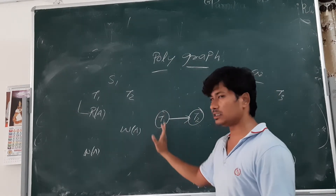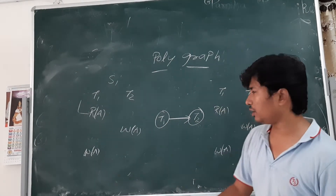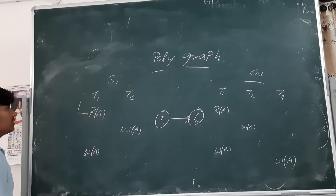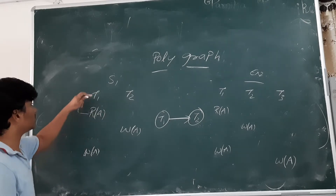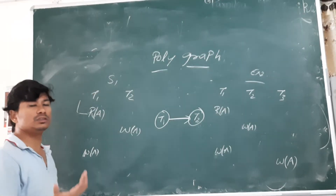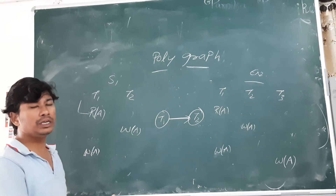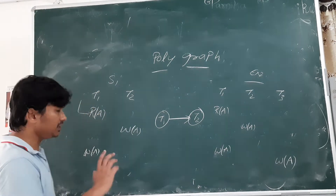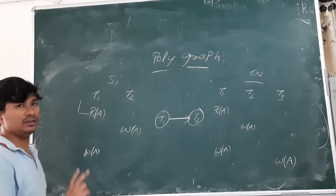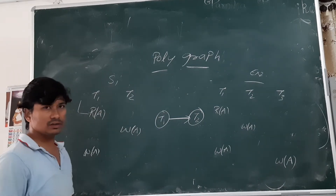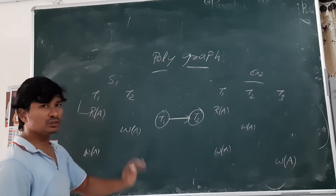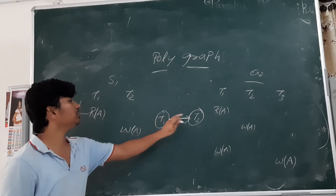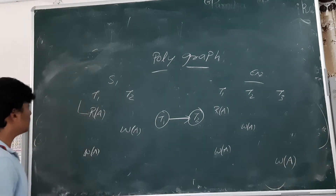There is a Read A in the given schedule and T1 is doing that initial read. Whatever serial schedule we consider, if it should be view equivalent, the initial read must also be done by T1. This means T1 should always execute before T2 in any serial schedule. That is why we draw a directed edge from T1 to T2.